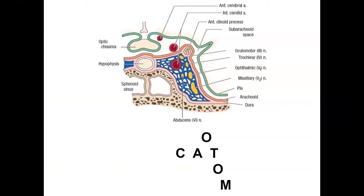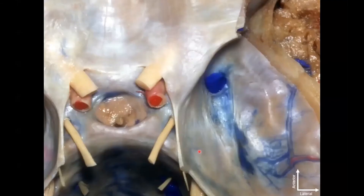And we can translate that roughly to what we see in a real specimen. This is a top-down view of the cavernous sinus — the top of the image is anterior, and the right side is lateral. This is the right middle fossa, and this is all dura — so this is an intradural perspective at the moment, looking out.